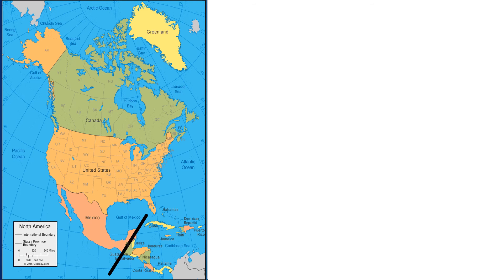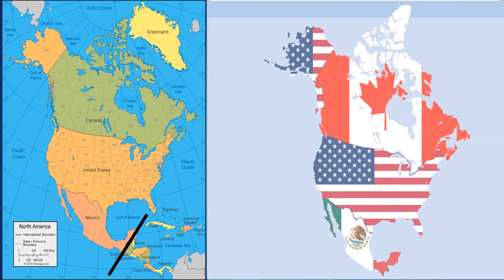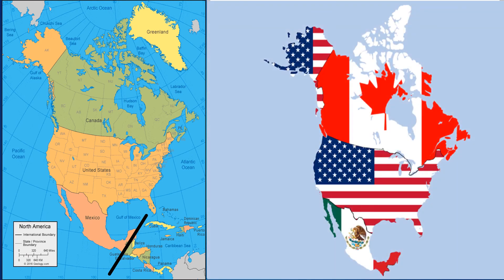Northern America is all the area above Mexico, which includes three independent countries — Canada, United States, and Mexico — and Greenland, which is part of the Kingdom of Denmark.